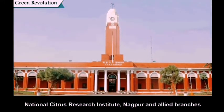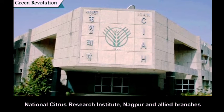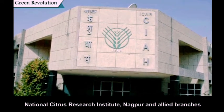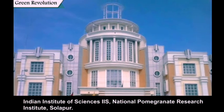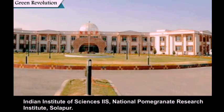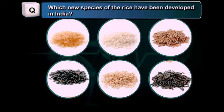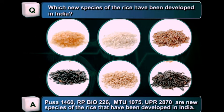Research institutes include: National Citrus Research Institute at Nagpur, National Institute of Science (IIS), and International Programmatic Research Institute at Solapur. New species of rice developed in India include: Pusa 1416, RP BIO 226, MTU 1075, and UPR 2870.